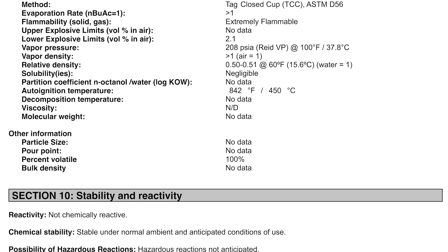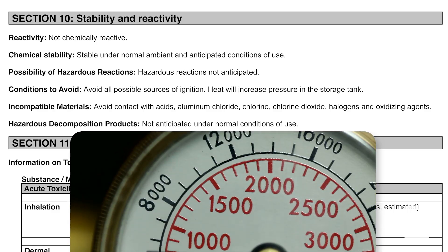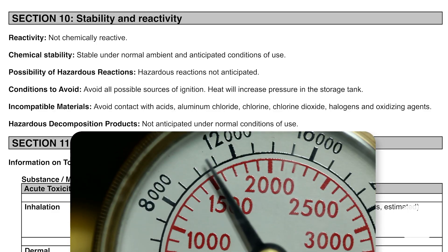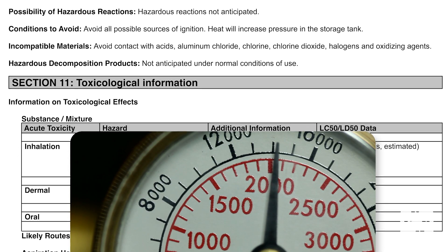Section 10: Stability and Reactivity. Here you'll find details on propane's stability and how it might react under different conditions. For example, avoid all possible sources of ignition, as heat will increase pressure in the storage tank.